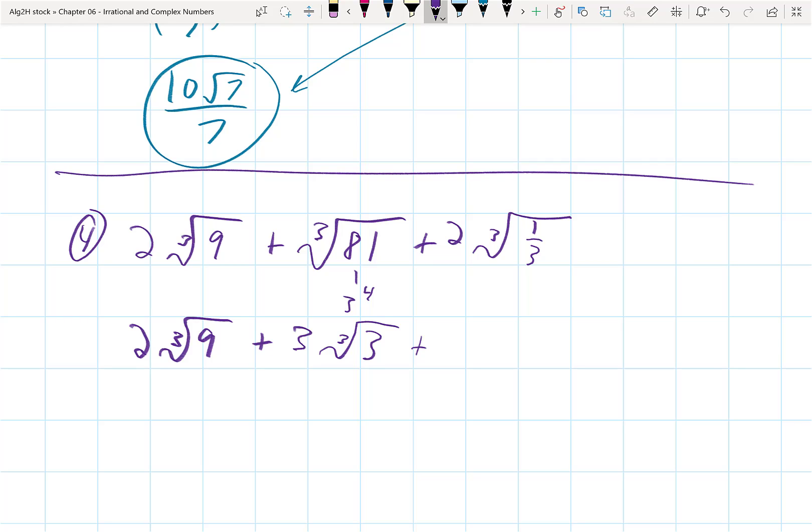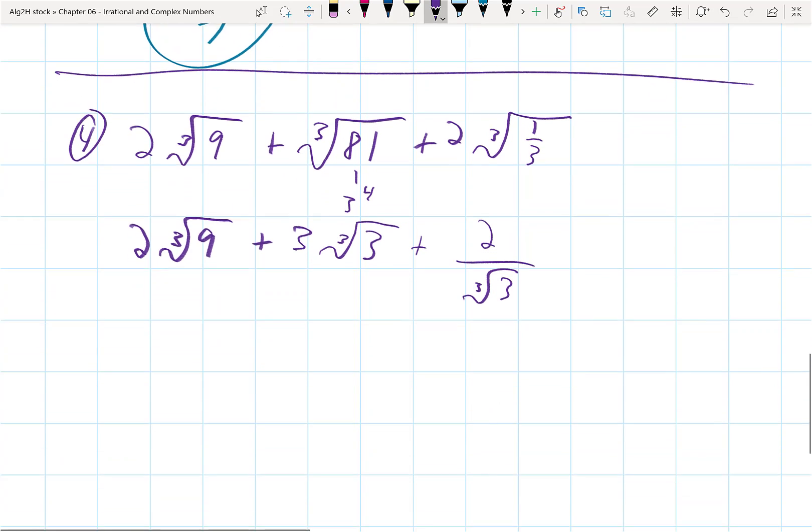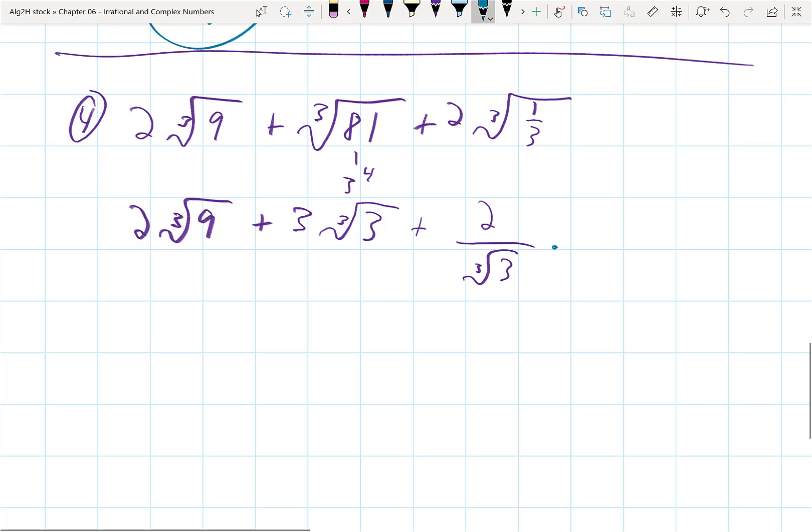And then, 2 cubed root of 1 third is the same as 2 times the cubed root of 1 over the cubed root of 3. Well, the cubed root of 1 is just 1, so this really becomes just 2 over the cubed root of 3, and I have to rationalize that. I have to multiply by a cubed root over a cubed root, and the number I would need to multiply by would be a 3 squared. Because I need 3 threes here to get out of the cubed root.